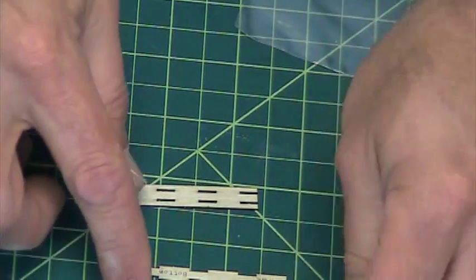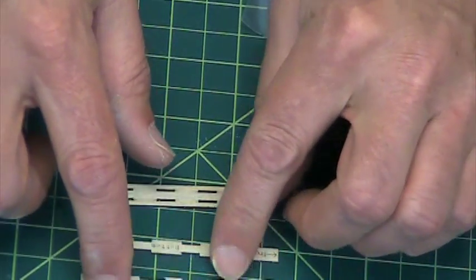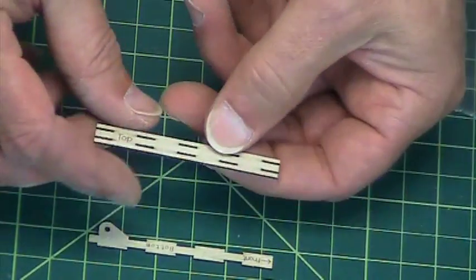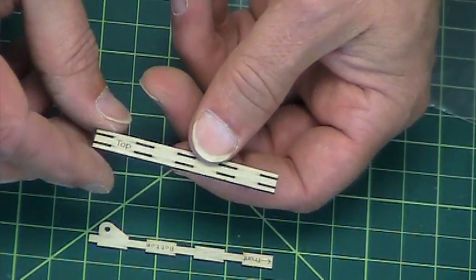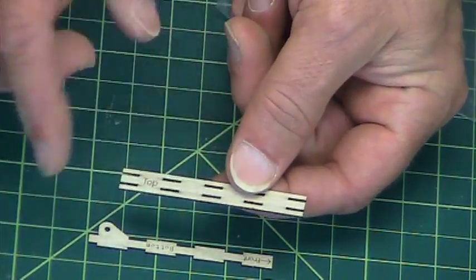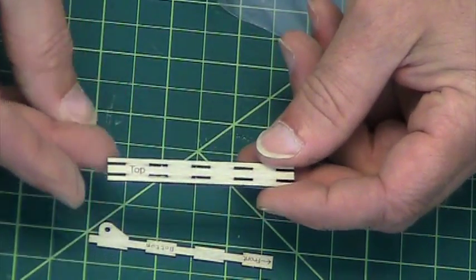There's two sides and they say front, and then there's a bottom and then there's a top. Now the top, it doesn't matter which way, this way or that way. It doesn't matter which way is the front. It's asymmetrical.